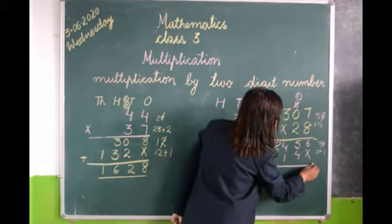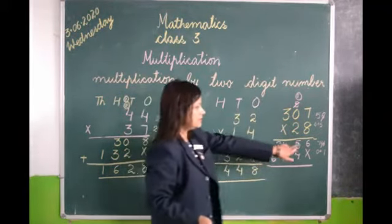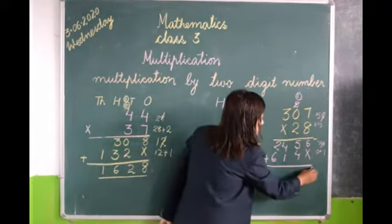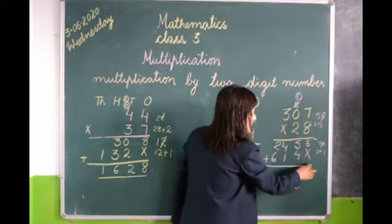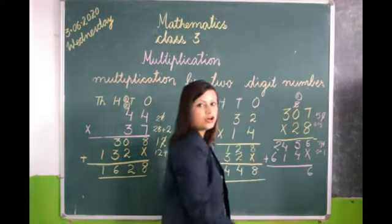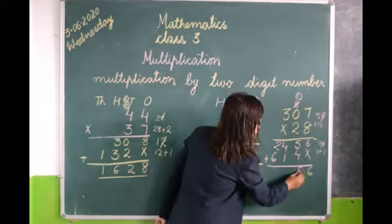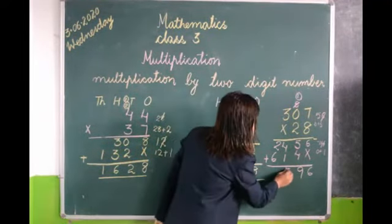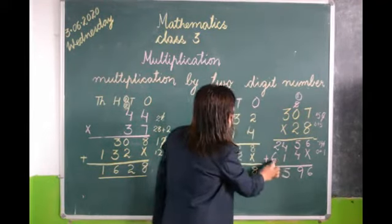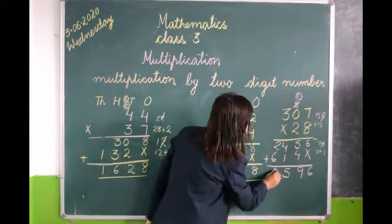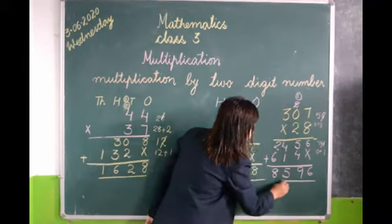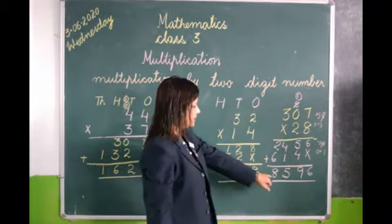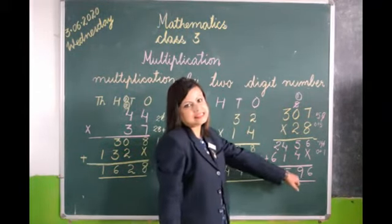Now what we have to do? We have to add this. 6 we will write down, nothing to add in 6. 5 plus 4 is 9. 4 plus 1 is 5, and 2 plus 6 is 8. So we get 8596.